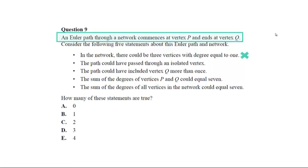The path could have passed through an isolated vertex. Now an isolated vertex doesn't have any edges going to it, that's its definition, so therefore you cannot pass through an isolated vertex on any path. So that's incorrect.